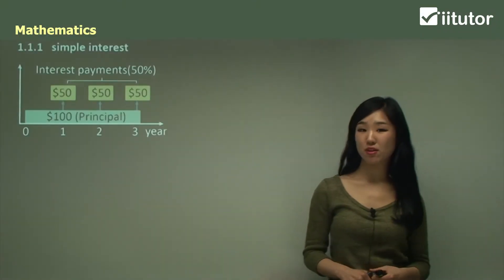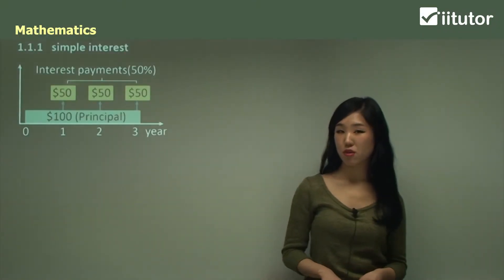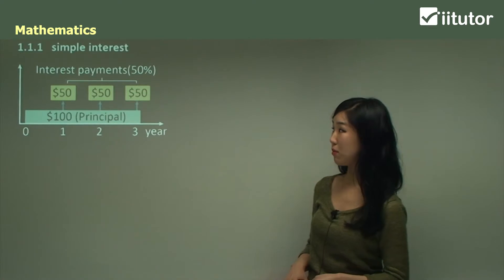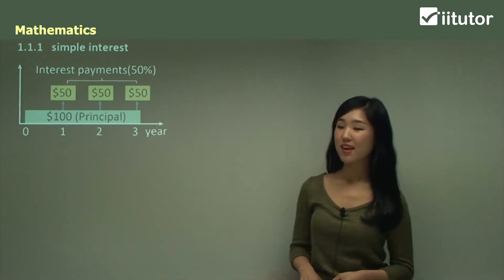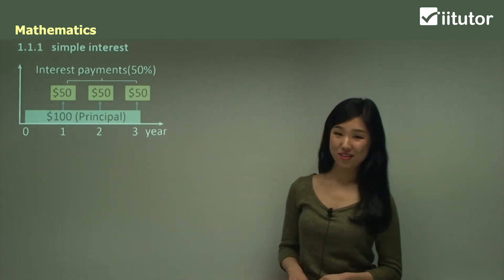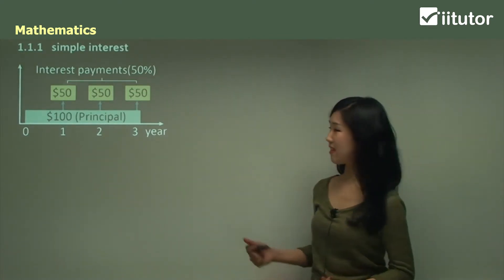Starting with simple interest. We have two types of interest and the first one is called simple interest. This is the simple version of interest, so it's actually very easy.